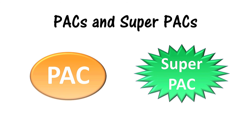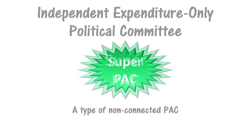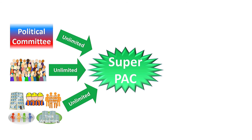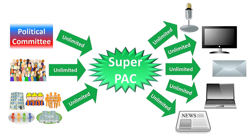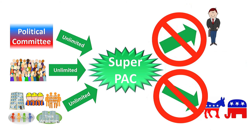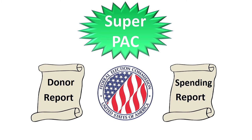Now let's examine super PACs. A super PAC is officially known as an independent expenditure-only political committee, and it is a special type of non-connected PAC. Super PACs can accept unlimited contributions from individuals, political committees, and organizations. Super PACs can spend an unlimited amount on advertisements, mailings, or other activities to support or oppose a candidate or issue, but they cannot contribute to, or coordinate with, a candidate committee or party committee. Super PACs must register with the FEC, and report the names of their donors, and account for their spending on a quarterly or monthly basis.